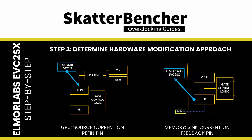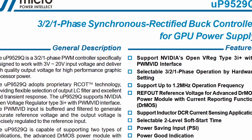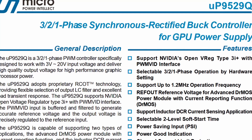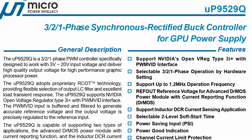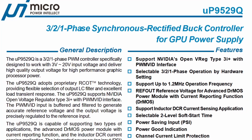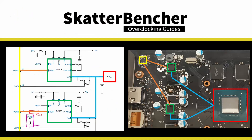Step 2: determine how the hardware modifications will work. The UPI Semiconductor UP9529P supports NVIDIA's open VRAC type 3i plus with PWMVID interface and other advanced features. For this guide, however, we will focus on being able to manually increase the voltage output. In the datasheet, we find a typical application circuit where we can trace back VOUT via the DRMOS to PWM 1, 2, and 3 of the voltage controller.